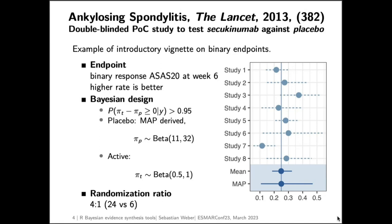The endpoint is a binary response of ASAS20 at week six, where higher response rates are better. The design was fully Bayesian and the success criterion defined was that at least with 95% probability the response rate in the active group exceeds the response rate in the placebo group. For the placebo group, a meta-analytic predictive prior was used. The randomization ratio was four to one: 24 patients on active and only six on placebo.